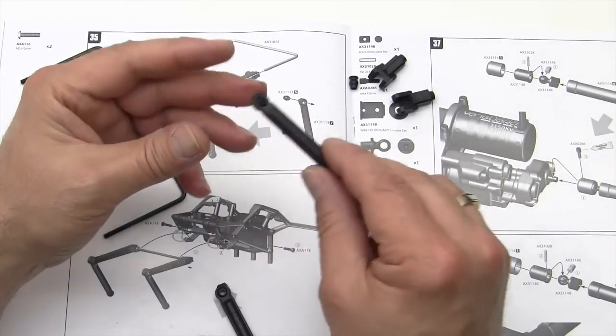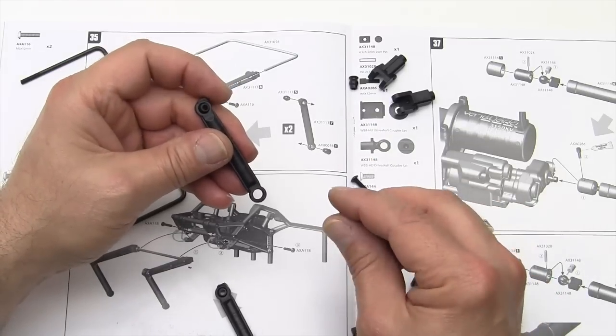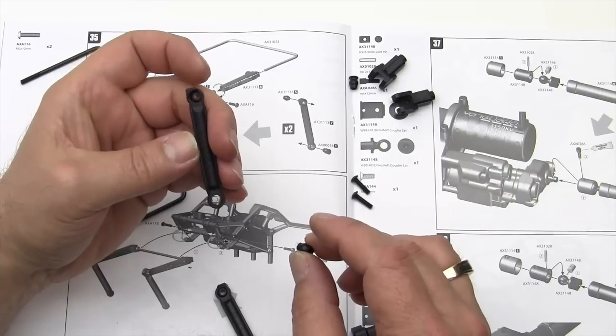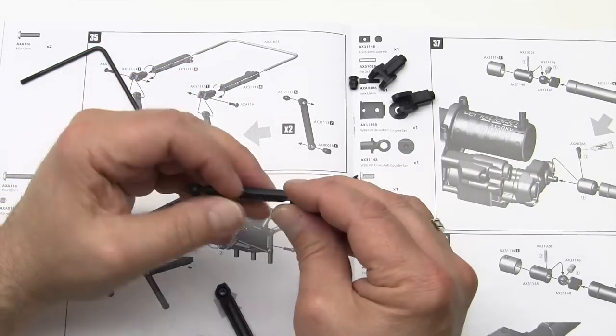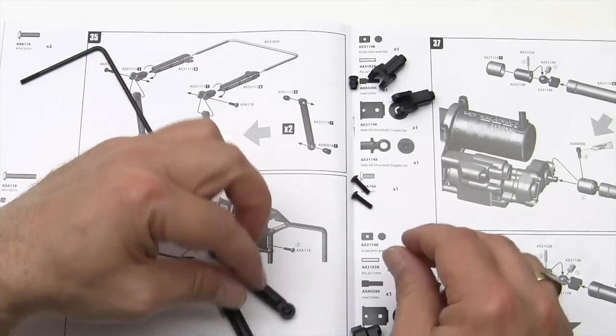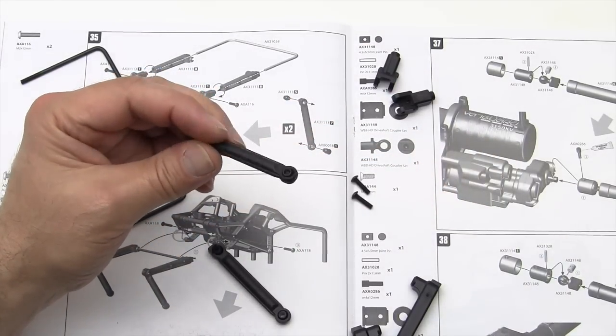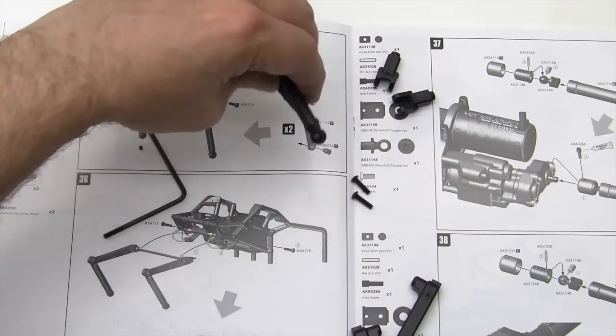And then we are going to put the flanged ones into the bottom. Okay, so we have that done, we've built two of those.